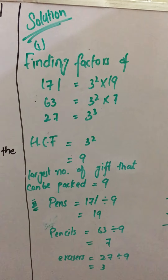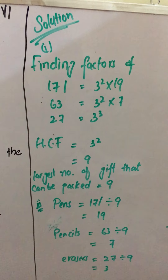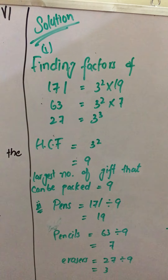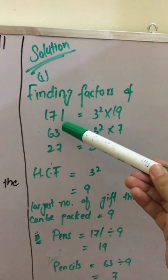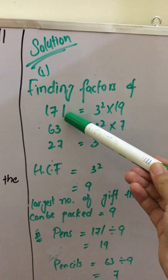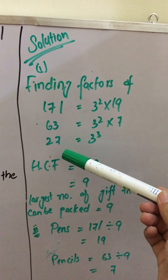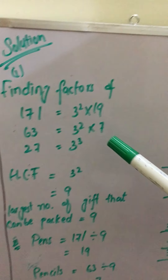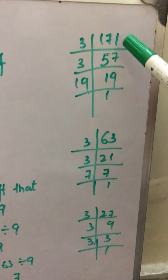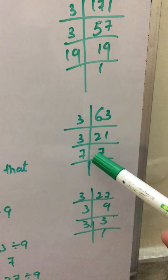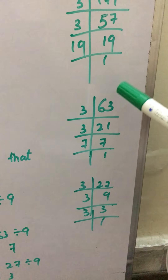For the first part, where we have to find the largest number of gifts that can be packed, we will first find the factors of 171, 63, and 27. Here is the rough work where we find the factors of all three numbers.